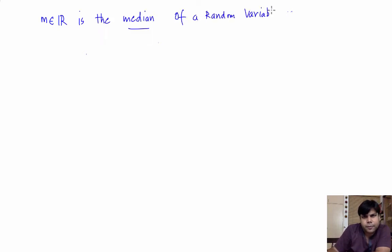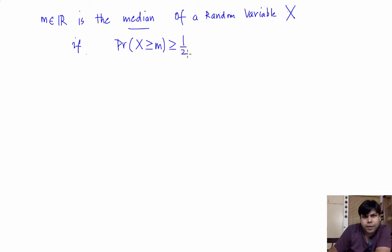We say m is the median of a random variable x if the following holds: the probability that x is greater than or equal to m is greater than or equal to one-half, and the probability that x is less than or equal to m is also greater than or equal to one-half.